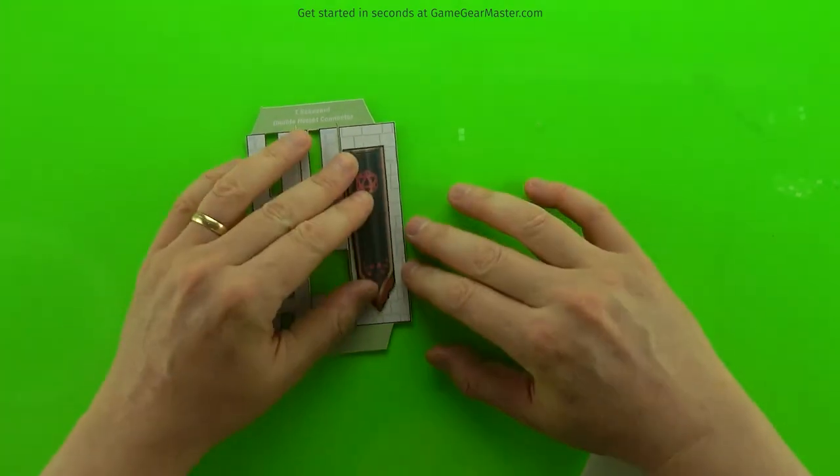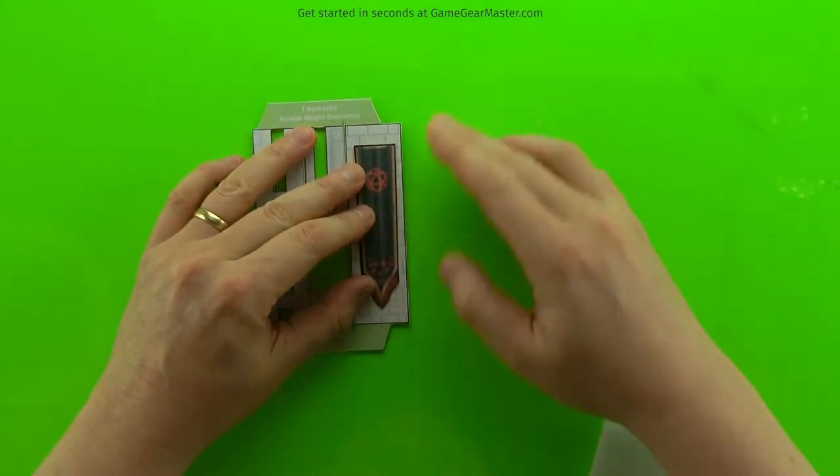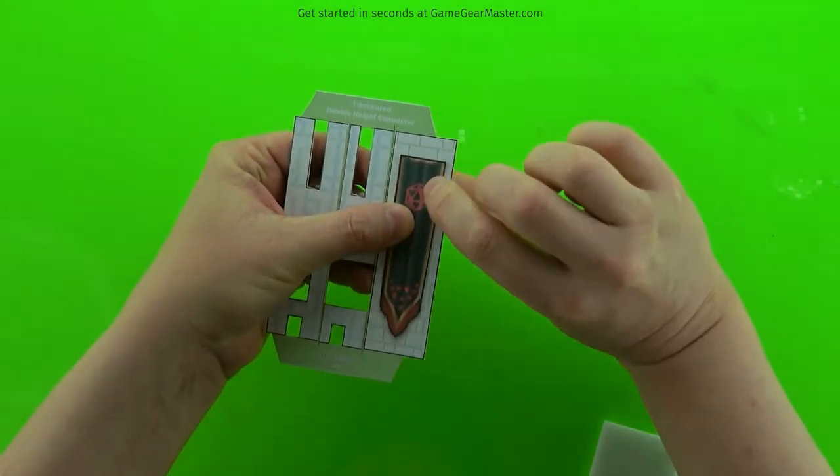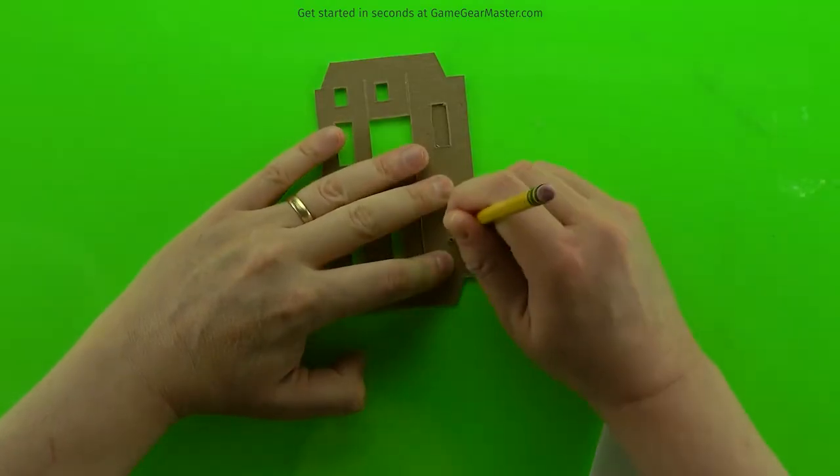And then we want to line up that flag where we want it to sit on our connectors. So we hold it in place and then turn it over. And then mark that hole.